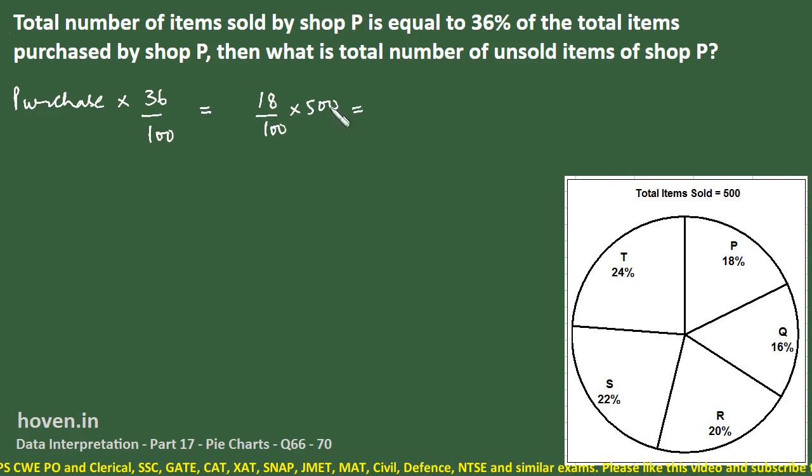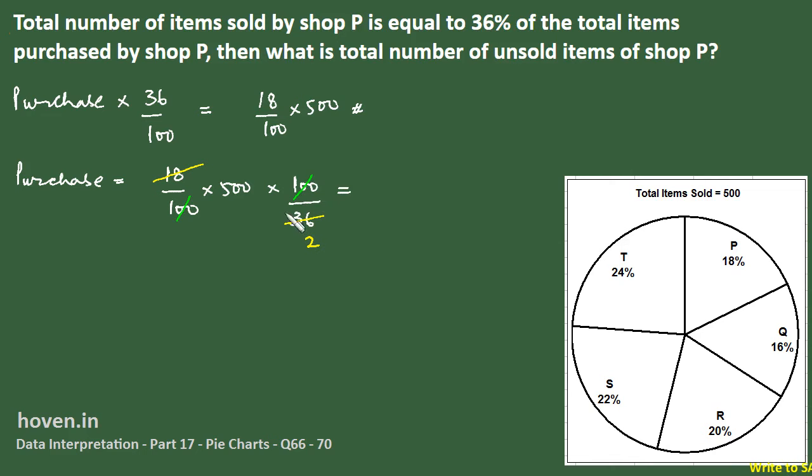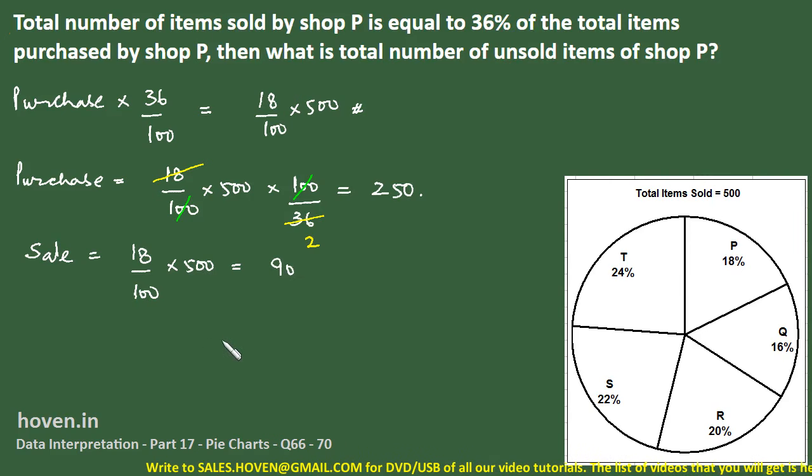Purchase will be equal to 18 by 100 into 500, take this 100 to the other side, bring 36 down. This 18 will give me 2, and therefore the total purchase is 500 by 2 equal to 250 items. And the sale is 18 by 100 into 500, which is 5 into 18, which equals 90.